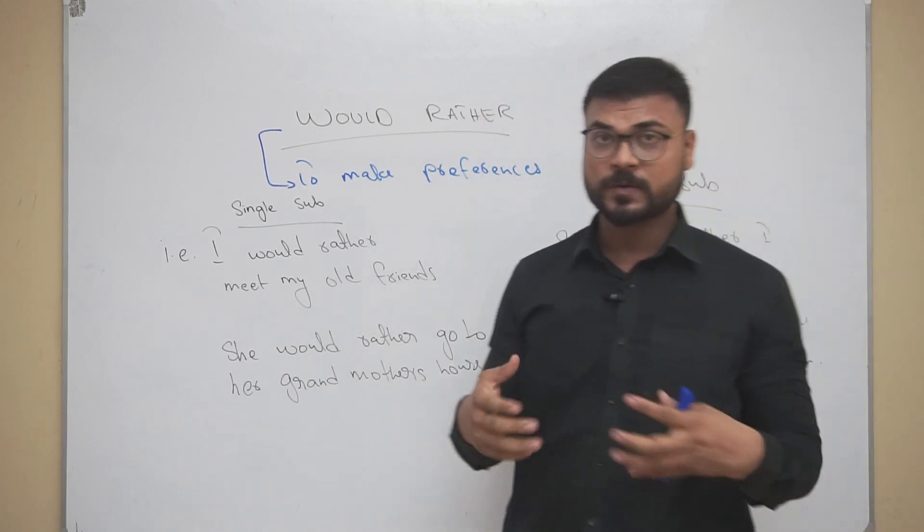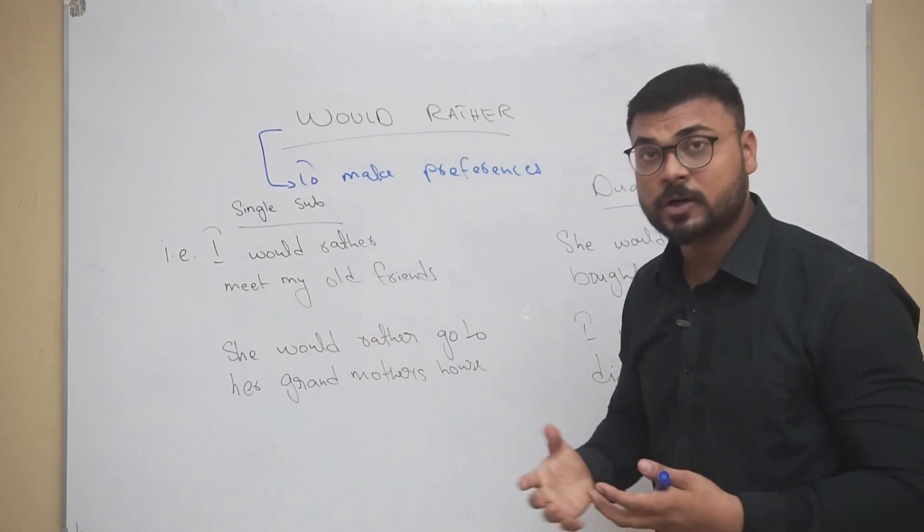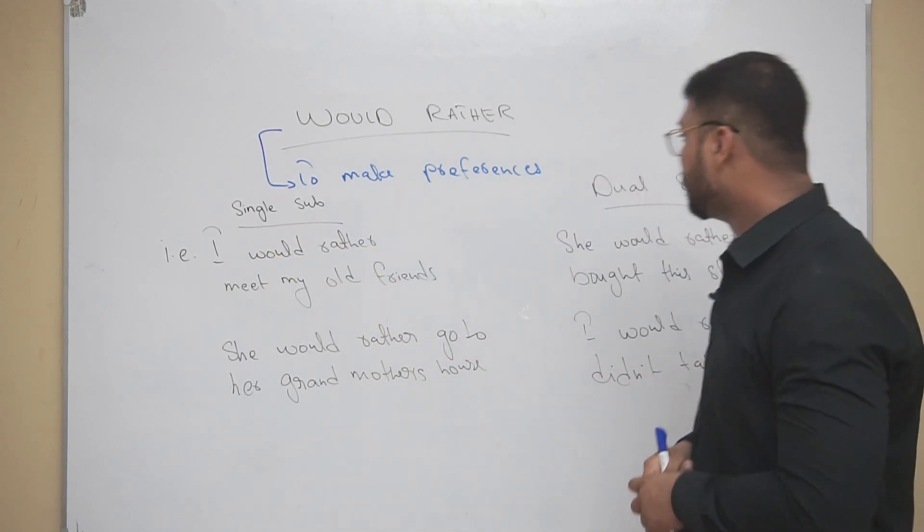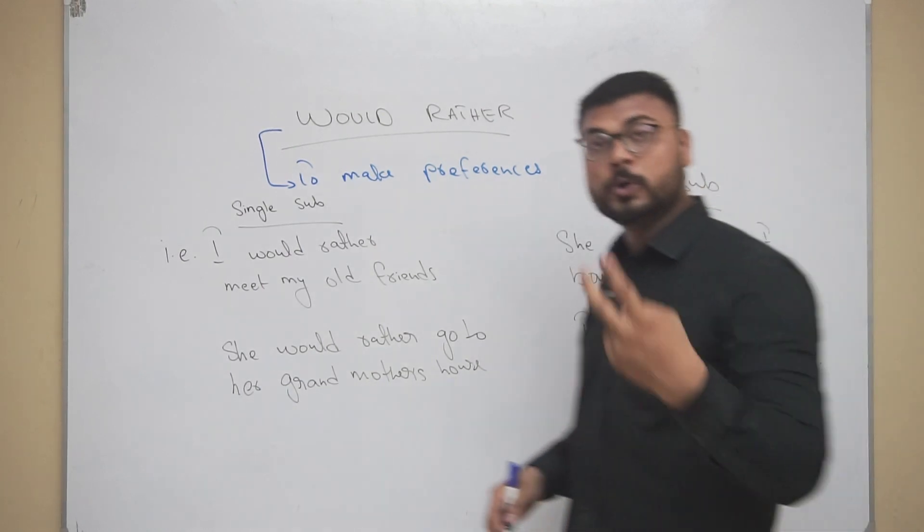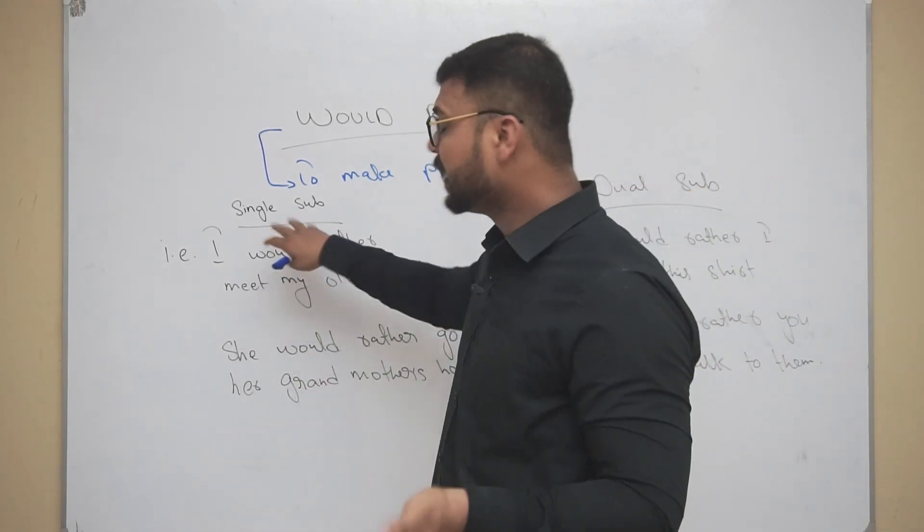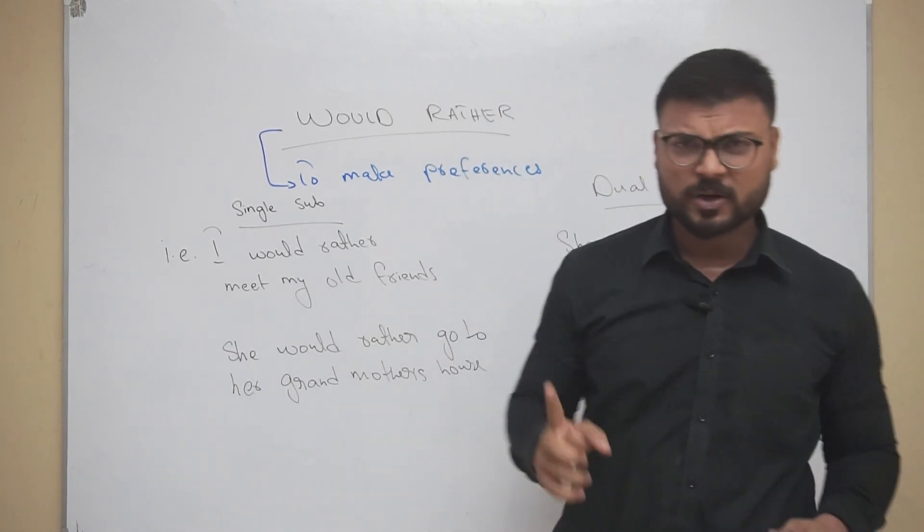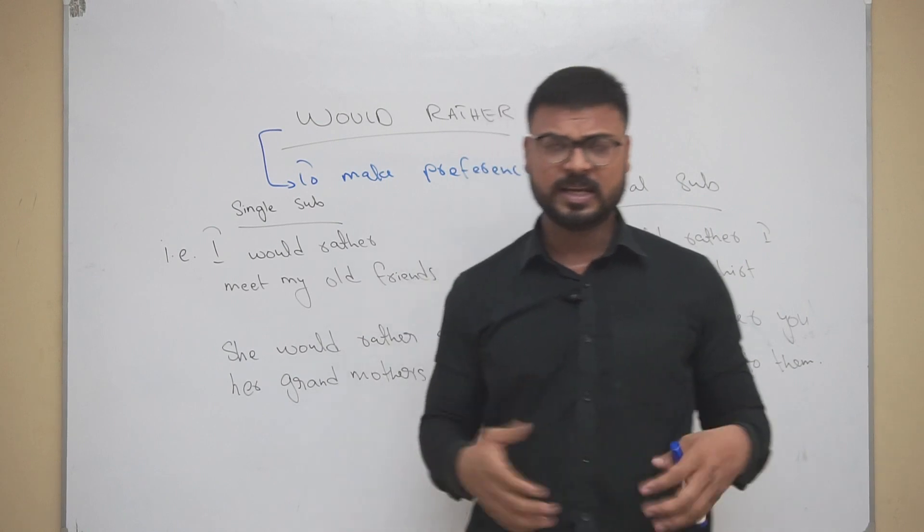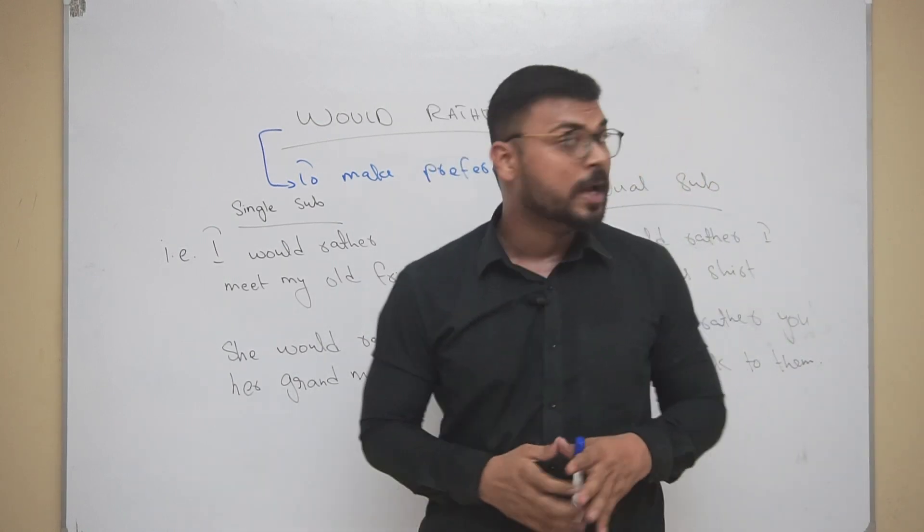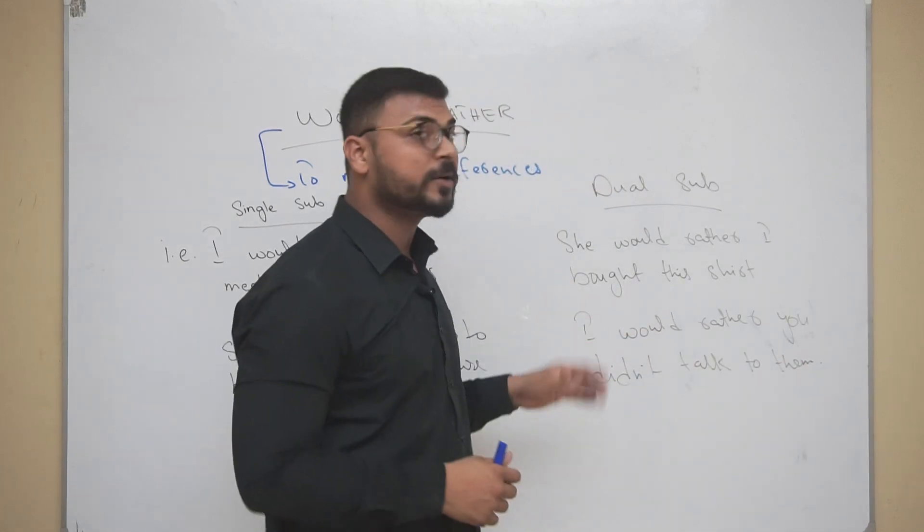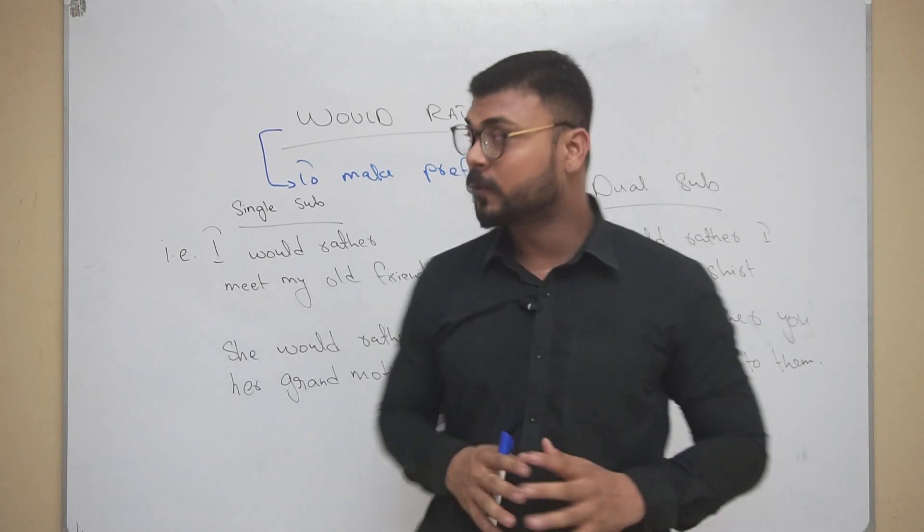Remember one thing - it has two other uses as well. It is used with single subject, means one subject, and number two is dual subject, means two subjects as well. Single subject doesn't mean just third person singular - it can be used with I, she, he, it, they, we, you as well. With dual subject means that it will have two subjects in it. Okay, so let's go for the first thing.